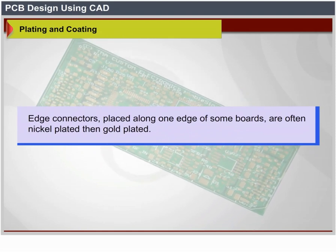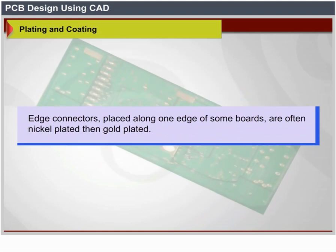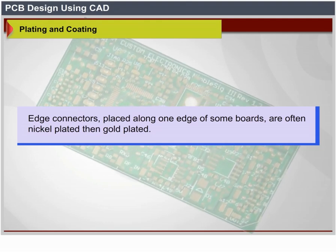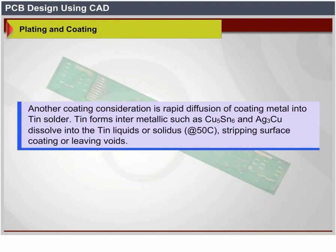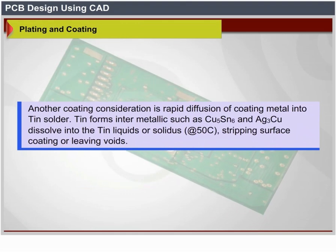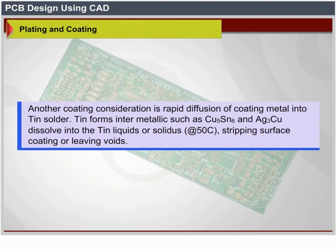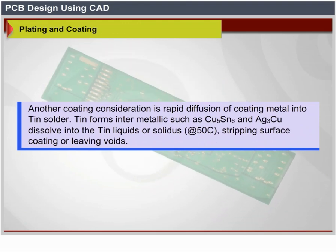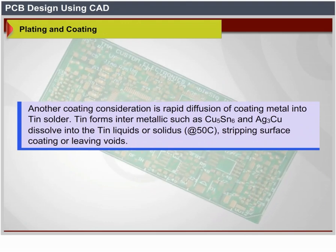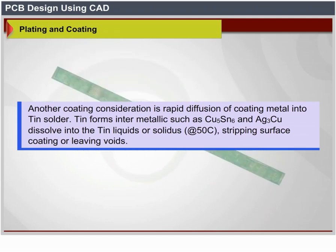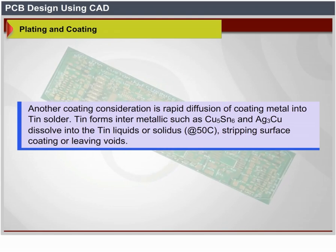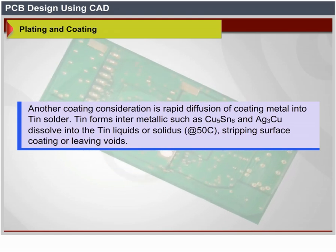Edge connectors placed along one edge of some boards are often nickel-plated then gold-plated. Another coating consideration is rapid diffusion of coating metal into tin solder. Tin forms intermetallics such as Cu₅Sn₆ and Ag₃Sn that dissolve into the tin at liquidus or solidus at 50 degrees Celsius, stripping surface coating or leaving voids.